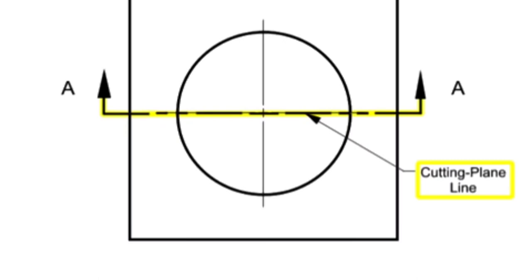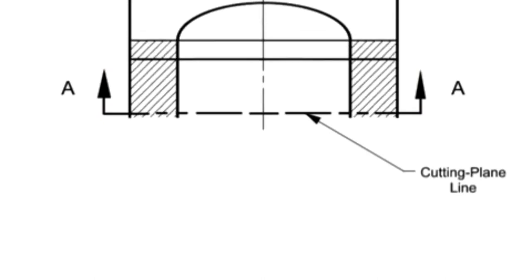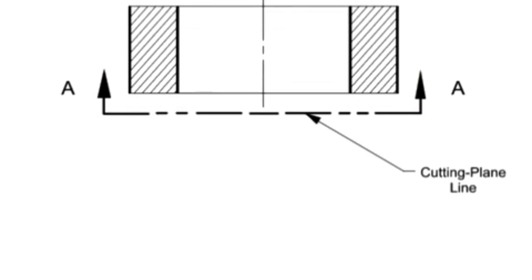Cutting plane lines are used to indicate a plane or planes in which a section is taken. The arrows at the end of the cutting plane line indicate the direction of the view, or the direction your eyes look, after the cut is taken.